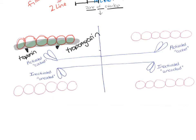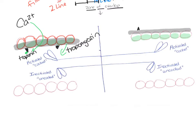Attached to the tropomyosin are other little molecules called troponin. When calcium gets released from the sarcoplasmic reticulum, the calcium is going to bind to that troponin. When it binds to the troponin, it rolls the tropomyosin away, and now the active sites are going to be exposed. Here's the actin with the active site exposed, the tropomyosin moved away, and the troponin here — it's been moved away and now the active site is exposed. Calcium is bound to those troponins holding that tropomyosin away.